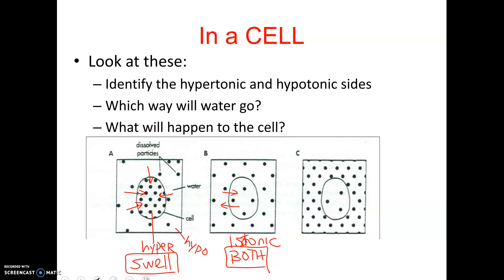In our last situation, the dots are closer together on the outside, meaning it's more concentrated — so this is our hypertonic side and inside is hypotonic. Our rule is that water goes towards the hypertonic side, so water would leave the cell and this cell would shrink.